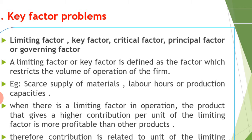The key factor or limiting factor is defined as the factor which restricts the volume of operation of the firm. In certain industries, some factors of production will be scarce. In some industries it may be raw material — there may be a raw material availability problem. In others it may be labor — labor availability can be a problem. There are different factors which are very important to a given industry, which is called the key factor. For example: scarce supply of materials, scarce labor hours, scarce production capacities, etc.